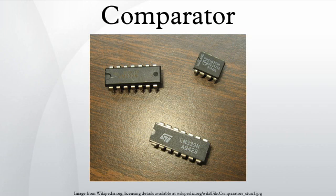In electronics, a comparator is a device that compares two voltages or currents and outputs a digital signal indicating which is larger. It has two analog input terminals and one binary digital output. A comparator consists of a specialized high-gain differential amplifier. They are commonly used in devices that measure and digitize analog signals, such as analog-to-digital converters, as well as relaxation oscillators.